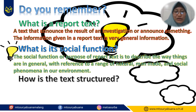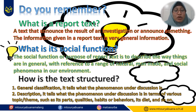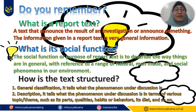And the structure of the text is: first, general classification. In this general classification, it tells what the phenomenon under discussion is. And the second part is description. In the description, it tells the phenomenon under discussion in terms of various topics or themes, such as its parts, qualities, habits, behaviors, diet, and so on.